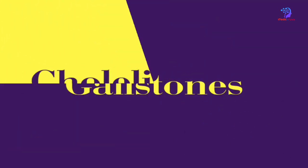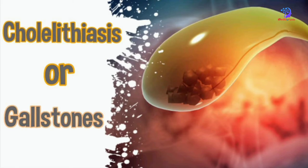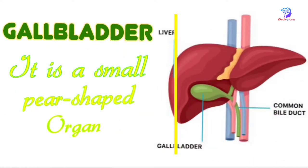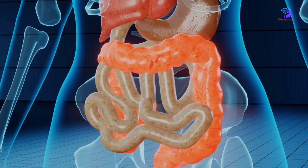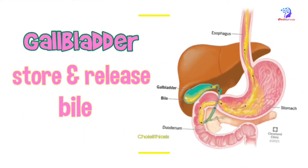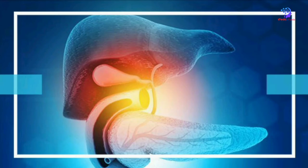Cholelithiasis, also known as gallstones, is defined as a hardened deposit of digestive fluid that can form in your gallbladder. The gallbladder is a small pear-shaped organ located on the right side of the abdomen, beneath the liver. The gallbladder stores and releases digestive fluid, which is a mixture of cholesterol, bilirubin, and other substances.